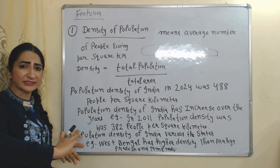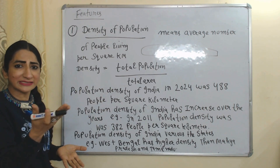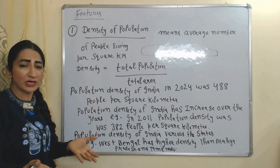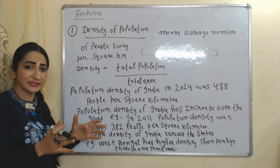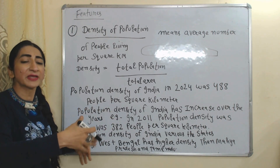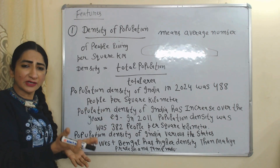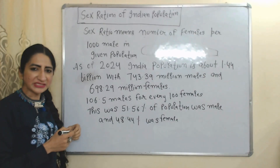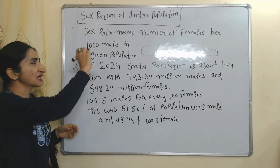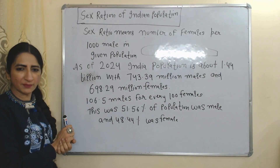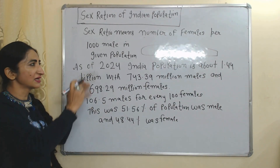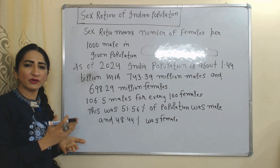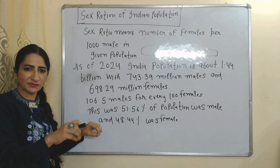For example, in 2011, population density was 382 people per square kilometer. Population density varies across states — for example, West Bengal has a higher density compared to Madhya Pradesh and Tamil Nadu. The next feature is sex ratio, which means the number of females per thousand males in a given population.